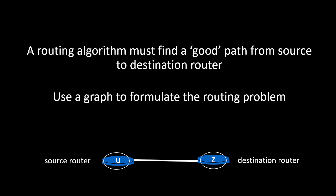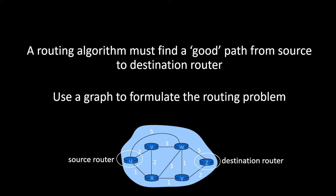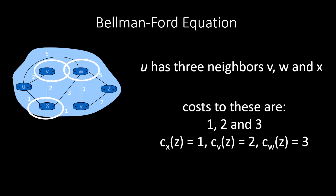The routing algorithm tries to find a minimum cost from one location — the source — to the destination. We normally use a graph to represent this network, and we'll simplify this in this video. Distance vector algorithms are based on the Bellman-Ford equation, so let's have a look at this.